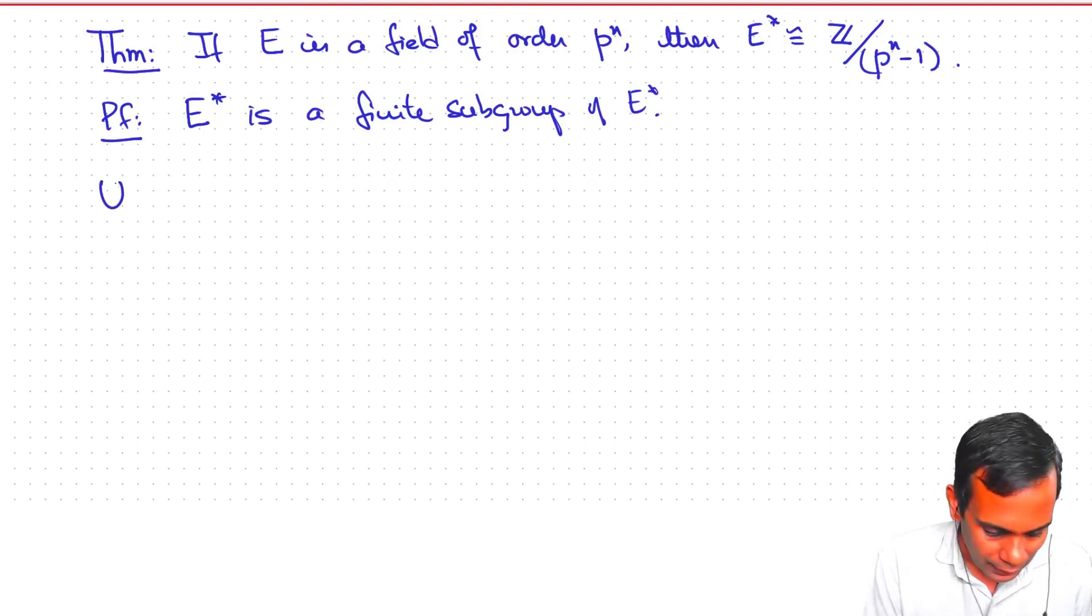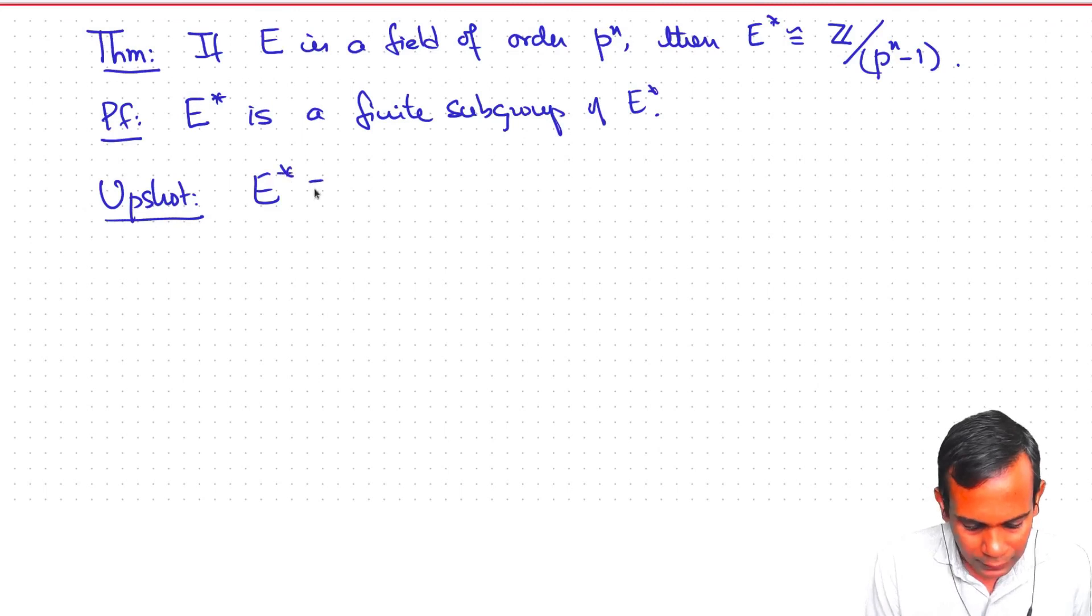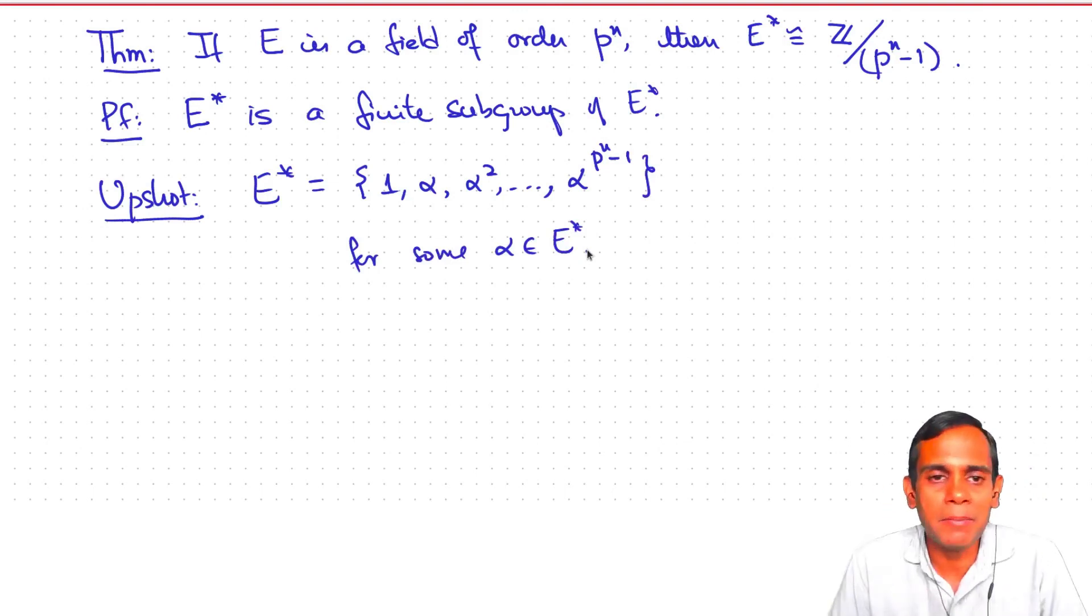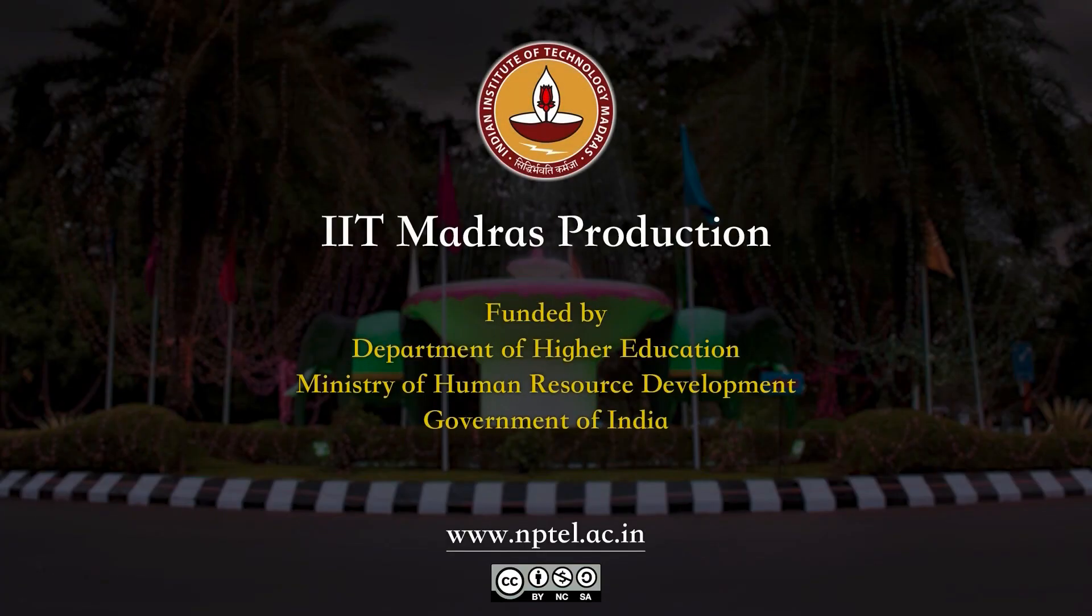The upshot of this is that E star can be written as 1, alpha, alpha squared, alpha to the power p to the n minus 1. You can pick an element alpha, a non-zero element of the field, such that every element of the field can be written as a power of that original element. That is a very powerful property and we will see some applications of that in the next lecture.